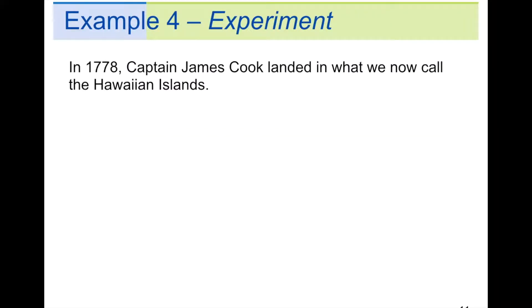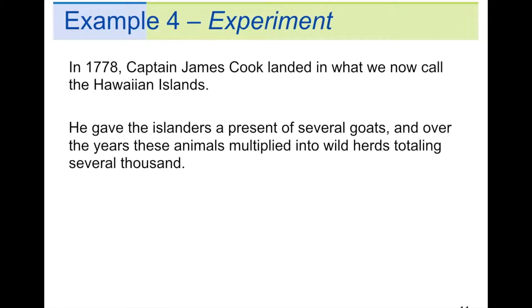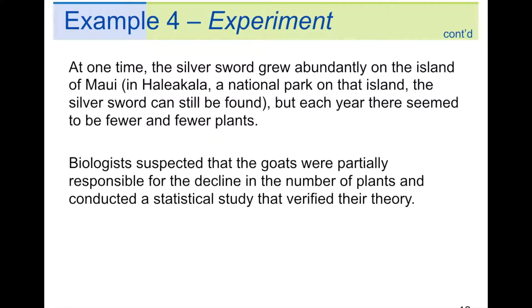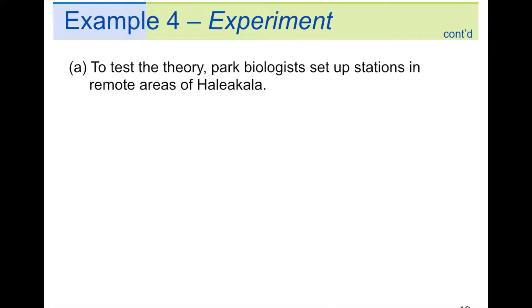In 1778, Captain James Cook landed in what we now call the Hawaiian Islands. He gave the islanders a present of several goats, and over the years, these animals multiplied into wild herds, totaling several thousand. They eat almost anything, including the famous silver sword plant, which was once unique to Hawaii. At one time, the silver sword grew abundantly on the island of Maui. In Haleakala, a national park on that island, the silver sword can be still found. But each year, there seemed to be fewer and fewer plants. Biologists suspected that the goats were partially responsible for the decline in the number of plants, and conducted a statistical study that verified their theory.